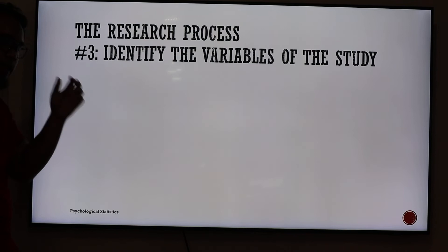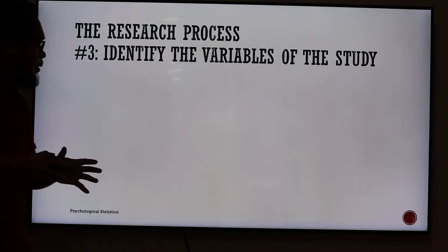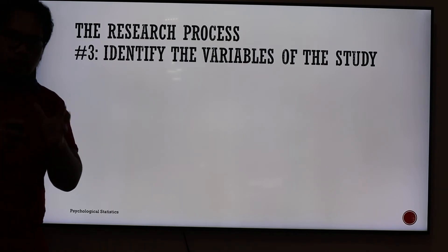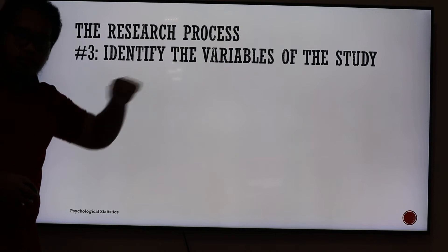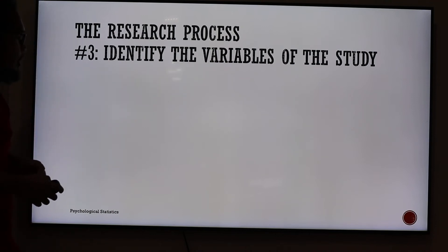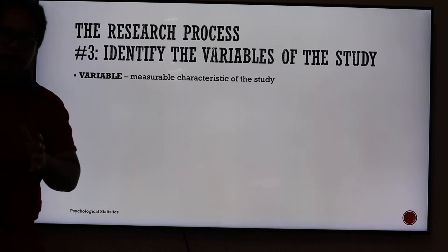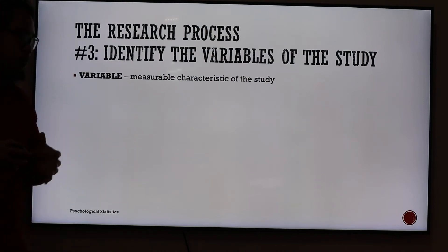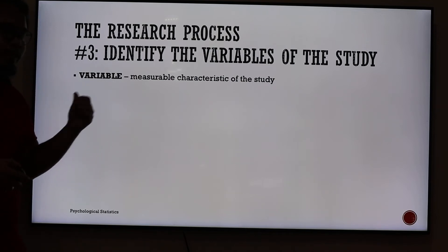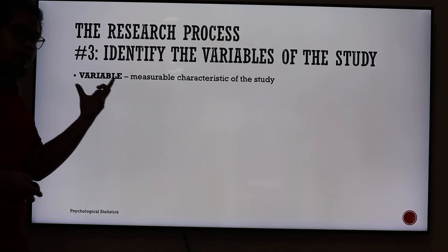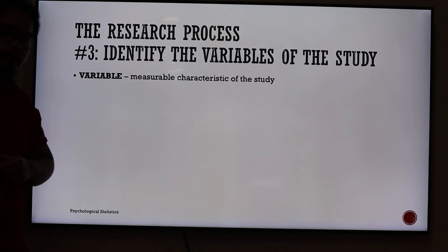Now, step three: you've already formulated your problem, you already know your population, and now you need to identify the variables of the study. A variable is a measurable characteristic of a study. You know the problem, you know the population — but what information will you take from that population? We call that a variable.